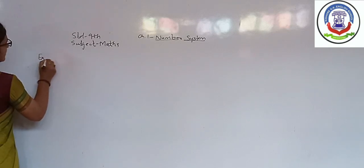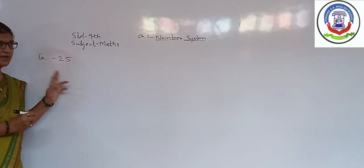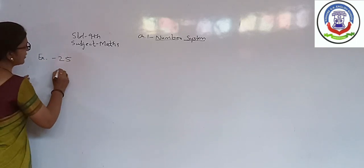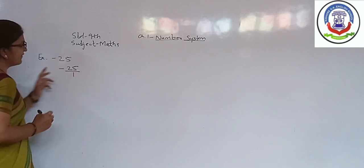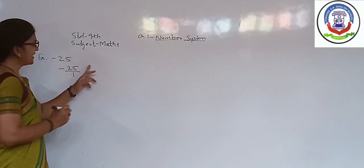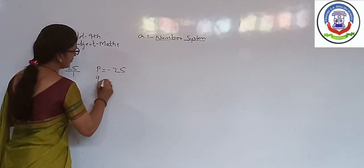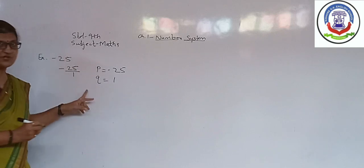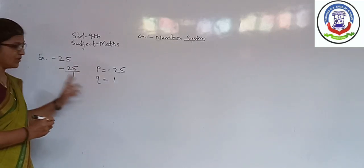Example is minus 25. Can it be a rational number? Yes, it is a rational number. Why? Because we can express it in the form minus 25 upon 1, where P is equal to minus 25, Q is equal to 1. Both P and Q are integers, and Q is not equal to 0.